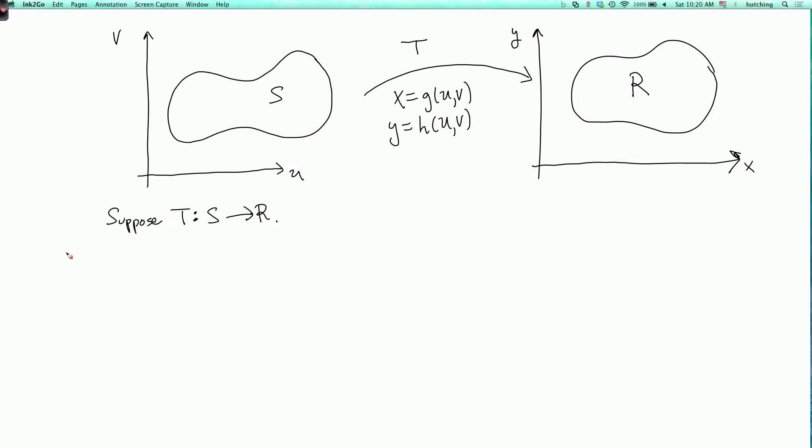Now we say that T is injective if, whenever you have two different points in S,